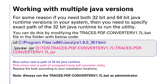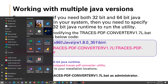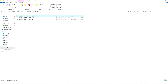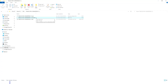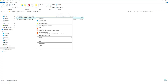To do this, we should modify the Traces PDF Converter version 1.7 .bat file — remove the existing lines and place two new lines. First, you need to make a backup copy of the original file. Let me show you: copy the file and take a backup of the original one.